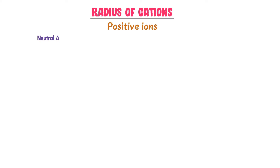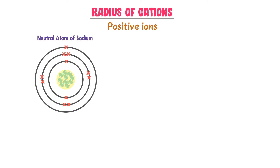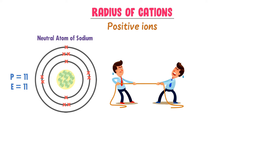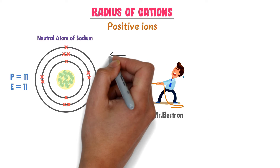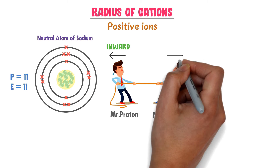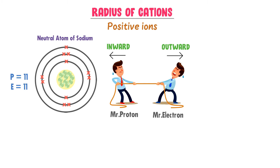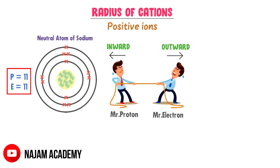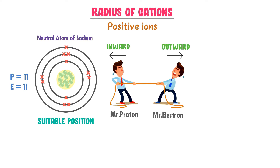Consider a neutral atom of sodium. In a neutral atom of sodium, there are 11 protons and 11 electrons. Remember that there is always a tug of war between protons and electrons. Protons always pull the electrons towards the nucleus in the inward direction, while the electrons try to move away in the outward direction. In neutral sodium, the 11 protons and 11 electrons cancel each other's effect, so electrons revolve at a suitable position around the nucleus.